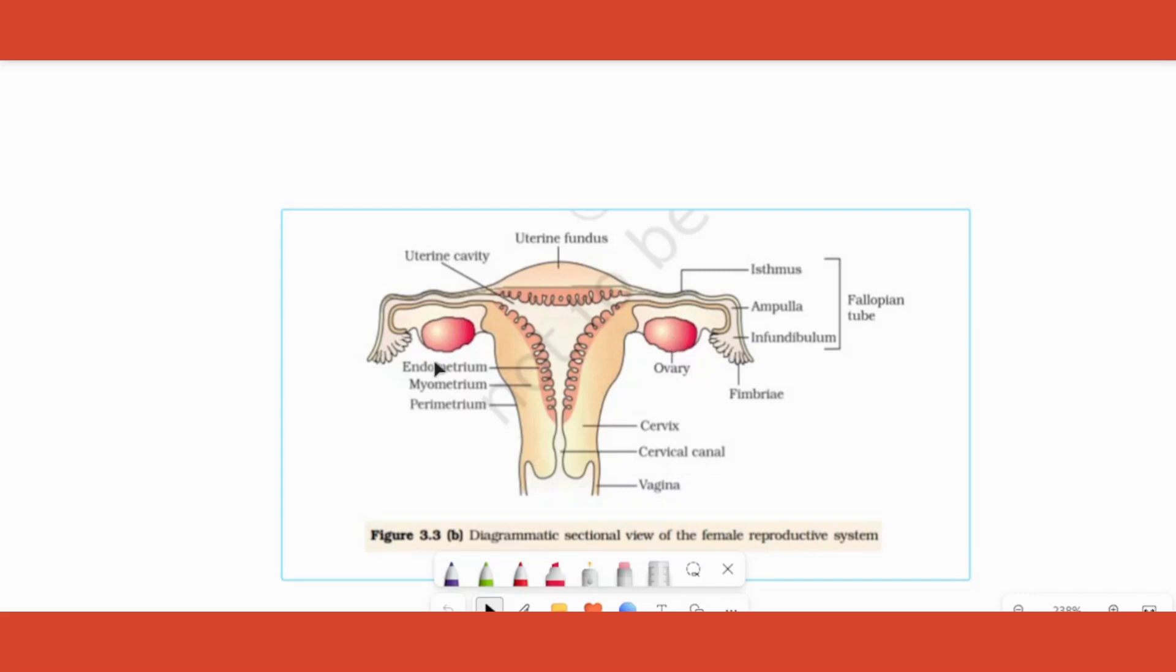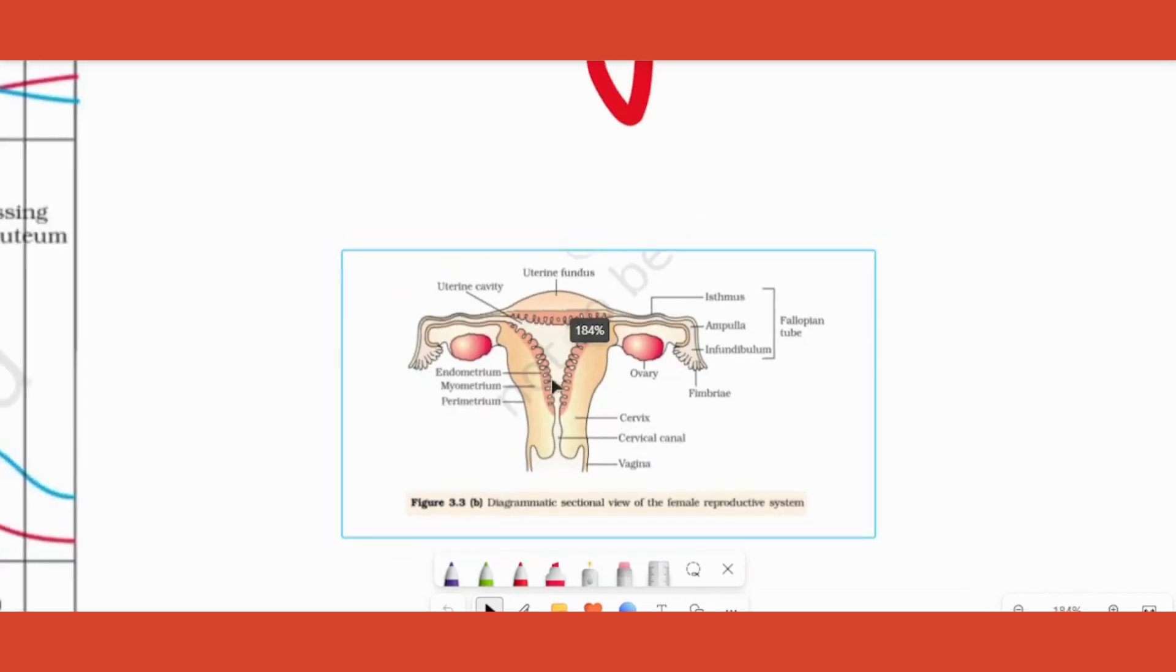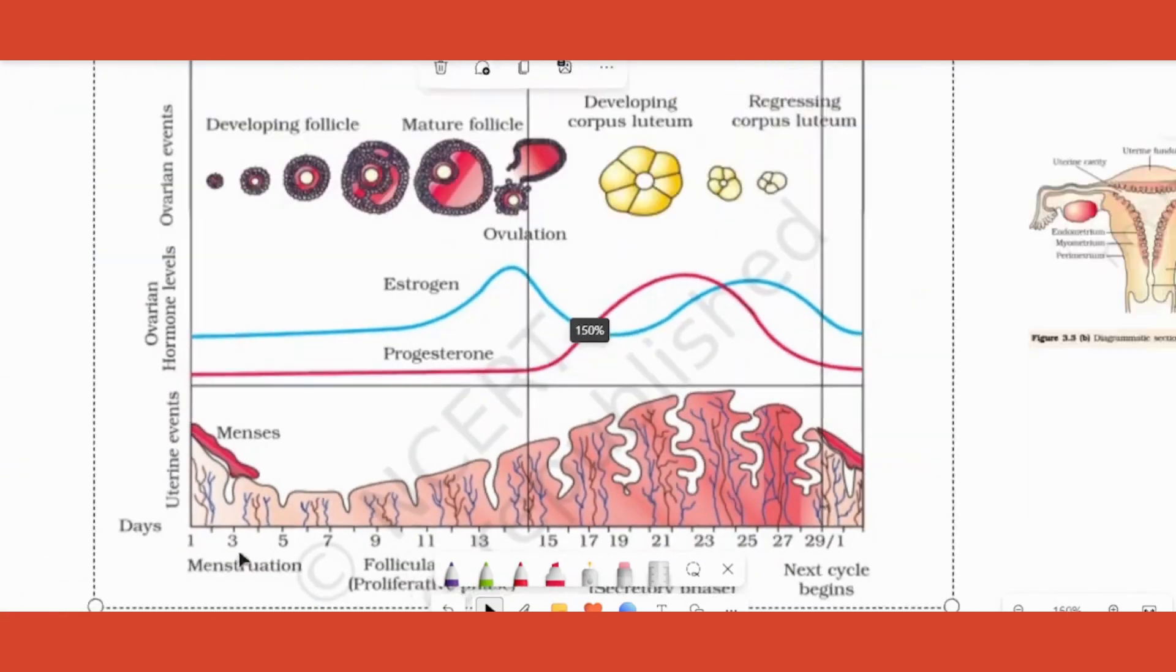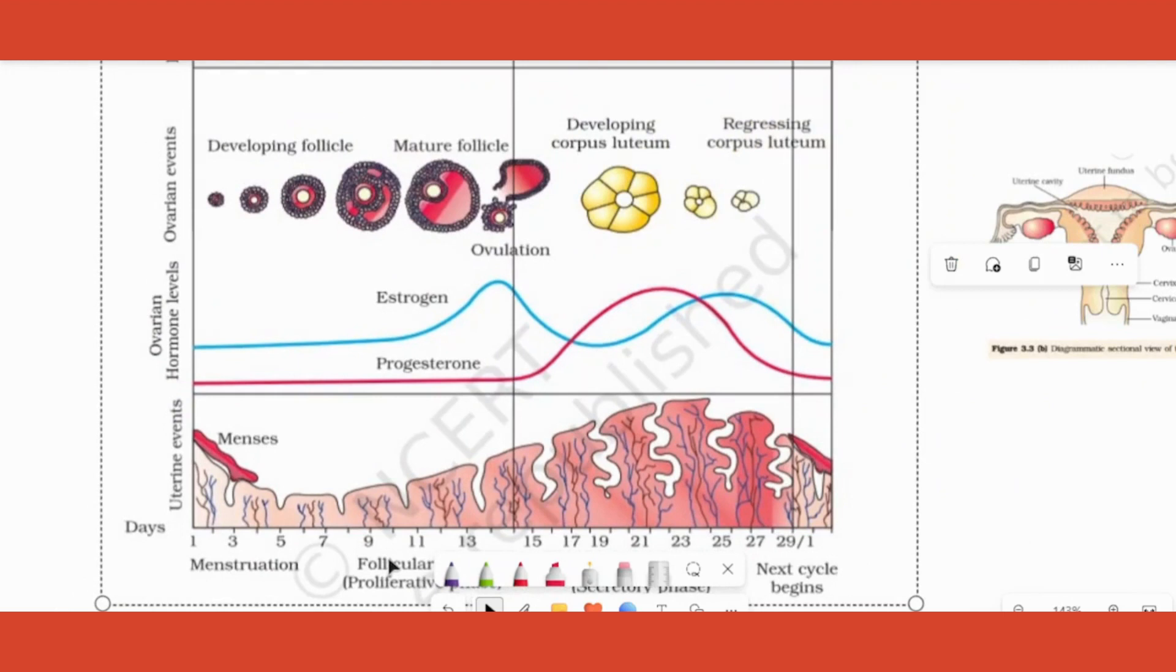In the ovary, follicular development is happening. At the same time in the innermost lining of the uterus, new cells are being formed, new layers are being formed. That's why this phase is also called as proliferatory phase.